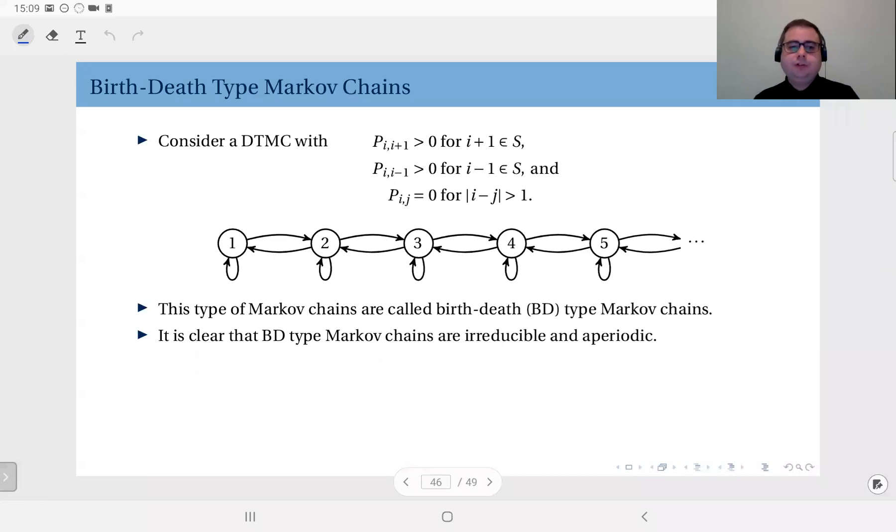Finally today I'm going to talk about a special type of Markov chains which we call birth-death type Markov chains. Consider this discrete time Markov chain where the transition from state i to i plus 1 is non-zero, and the transition from i to i minus 1 is again non-zero.